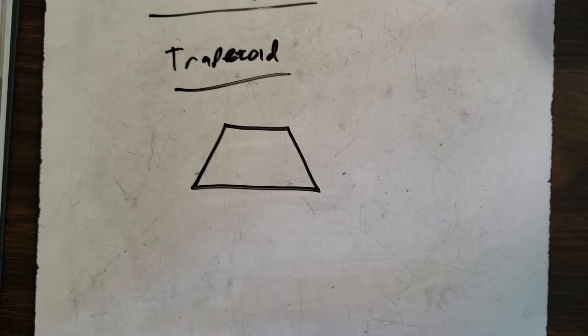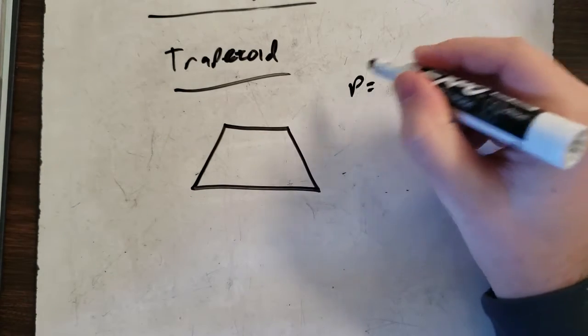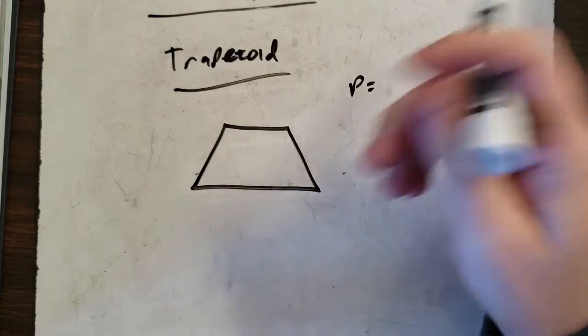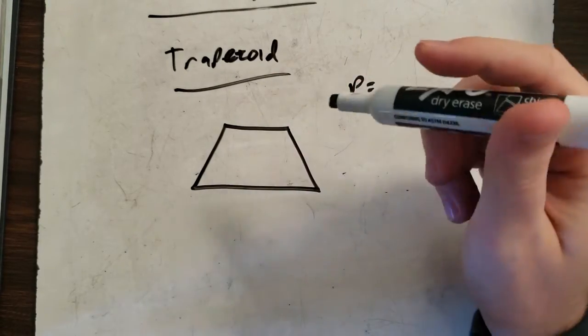So once again, for the perimeter, add up all the outsides. That's all you're doing for these ones. Adding the outsides. Let's say for this one,